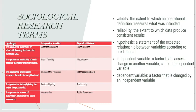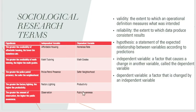Here is a chart to help you remember. The hypothesis: the greater the availability of affordable housing, the lower the homeless rate. The greater the availability of math tutoring, the higher the math grades. The greater the police patrol presence, the safer the neighborhood. The greater the factory lighting, the higher the productivity. The greater the amount of observation, the higher the public awareness. Each hypothesis has an independent and dependent variable.